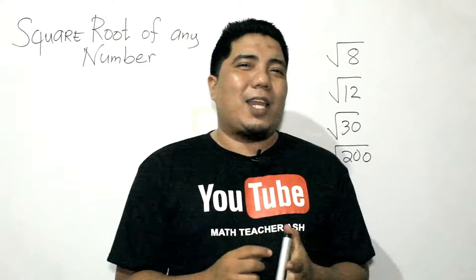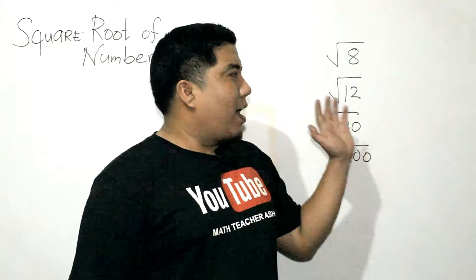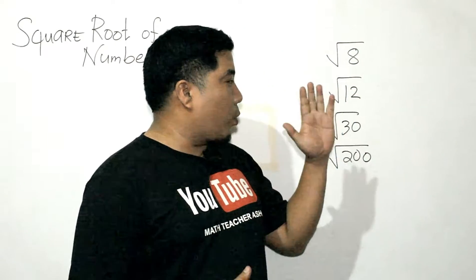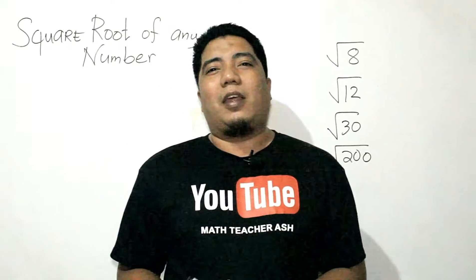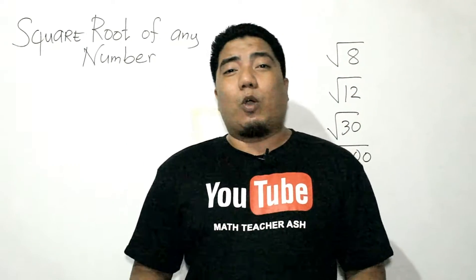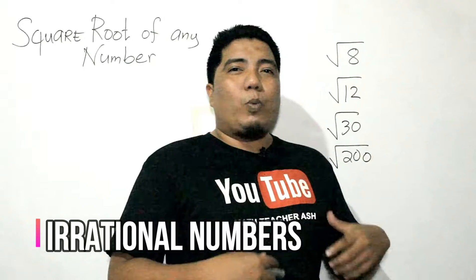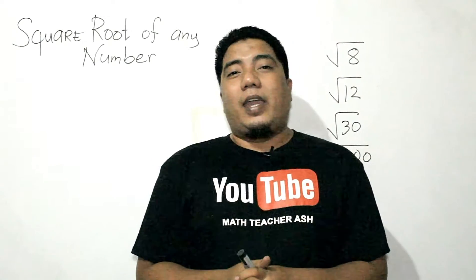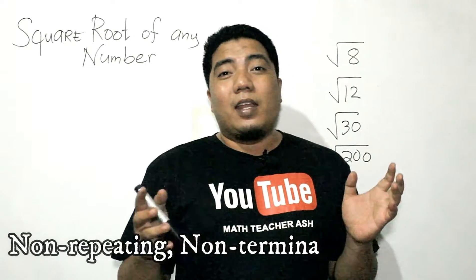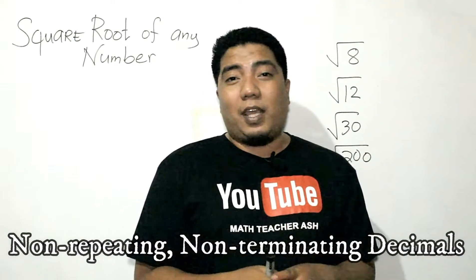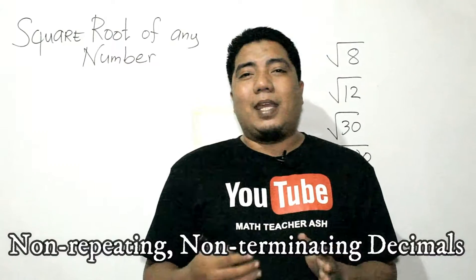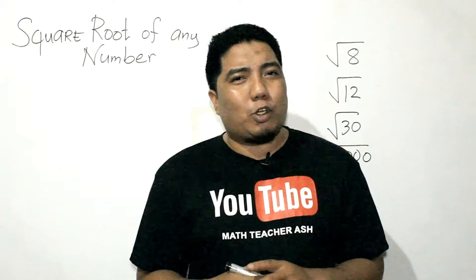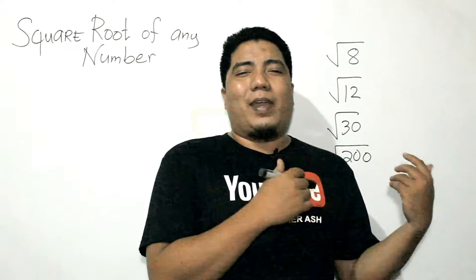The big challenge here is: what if you are given a number that is not a perfect square, like square root of 8, square root of 12, square root of 30, and square root of 200? These numbers are what we call irrational numbers because they will yield a decimal number with non-repeating, non-terminating digits — meaning it doesn't end and it doesn't repeat.